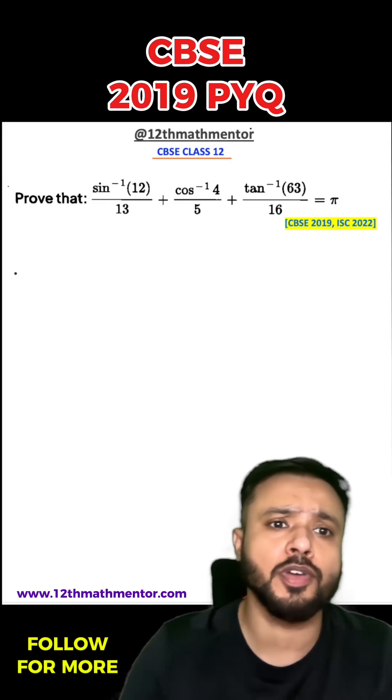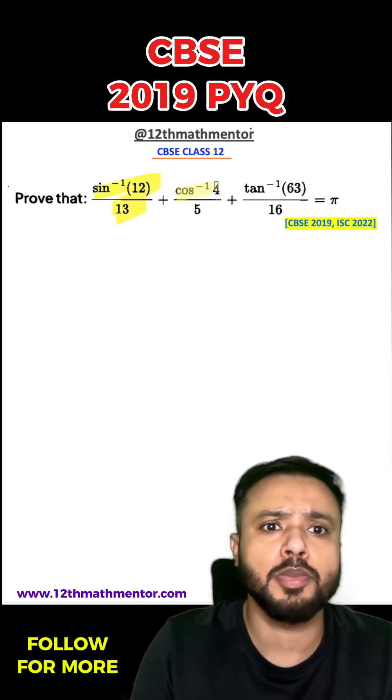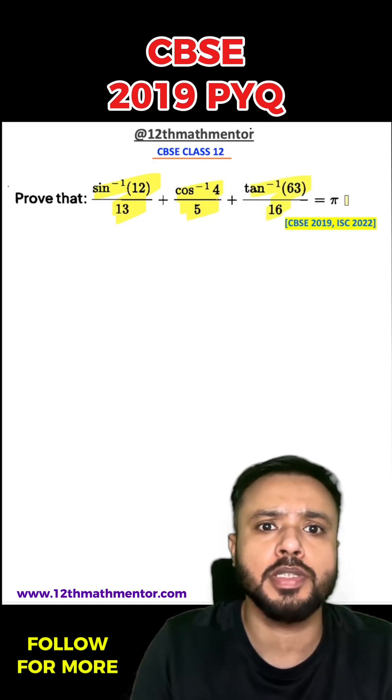This super tricky question from inverse trigonometry functions where we have to prove that sin inverse 12 by 13 plus cos inverse 4 by 5 plus tan inverse 63 by 16 is equal to pi was asked in CBSE 2019 class 12 math board examination.